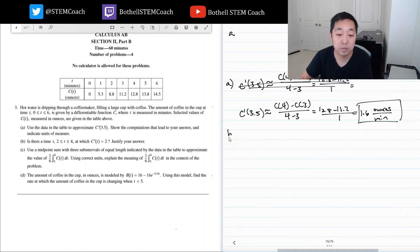Part b: Is there a time t between two and four at which c prime of t equals two? Between two and four, the secant line slope c of 4 minus c of 2 over 4 minus 2 equals 12.8 minus 8.8 over 2, which is 4 over 2, equal to 2. Now, c is differentiable.